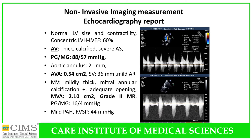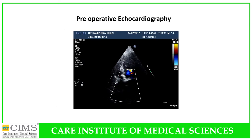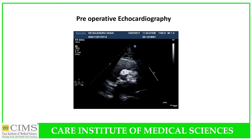Sinus of Valsalva was 36 mm by echocardiography with mild aortic regurgitation. The mitral valve showed mildly thickened leaflets with annular calcification 1+, adequate opening, mitral valve area of 2.10 cm², grade 2 MR, peak gradient of 16 mmHg, mean gradient of 4 mmHg, and mild RVSP of 44 mmHg. Pre-operative echocardiography confirmed critical aortic stenosis with Doppler findings consistent.